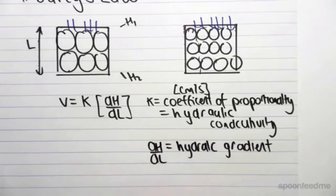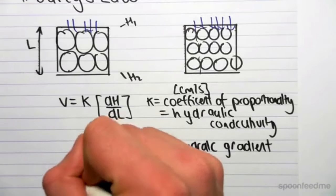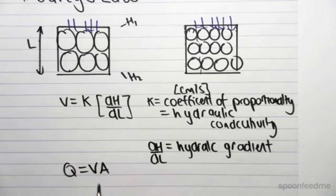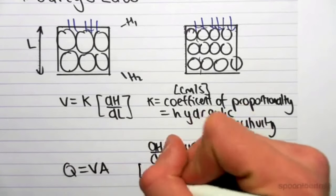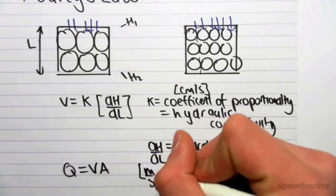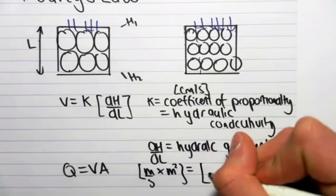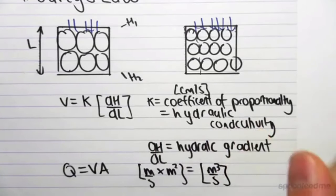Just as a side note, we know that Q equals VA. So Q, the flow rate, is the same as the velocity times the area. This makes sense unit-wise: velocity is meters per second, area is meters squared, which gives us meters cubed per second, which is flow.